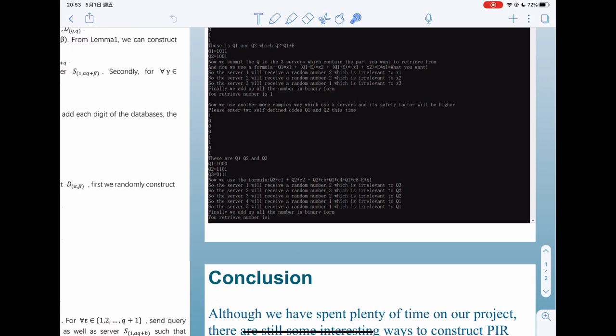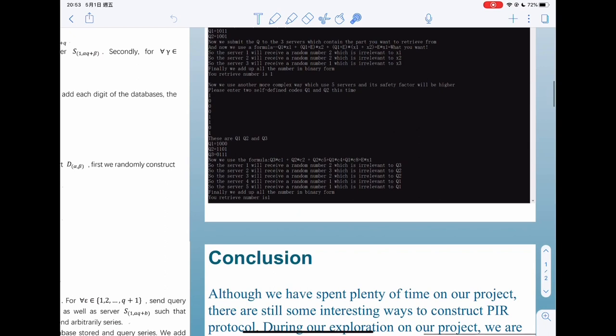And then q1 is 1, 0, 0, 0, q2 is 1, 1, 0, 1, and q3 is 1, 0, 0, 1, 1, 1. That is q1 plus q2 plus e. And we send the query to the corresponding server. We can finally know that we can retrieve the number 1. That's all.